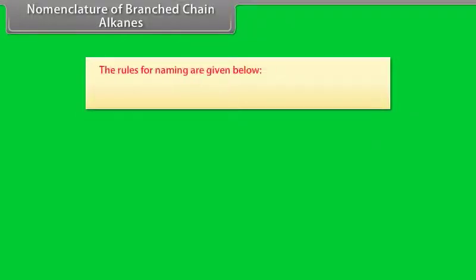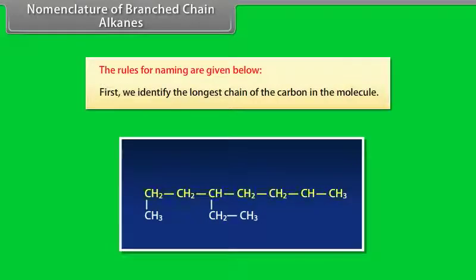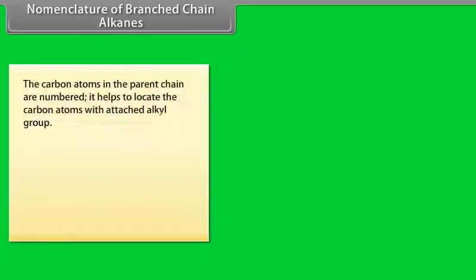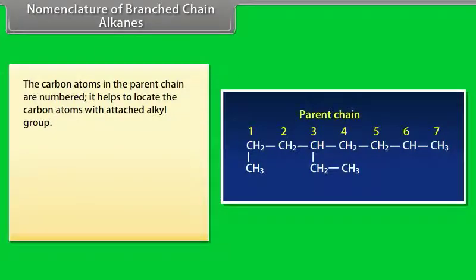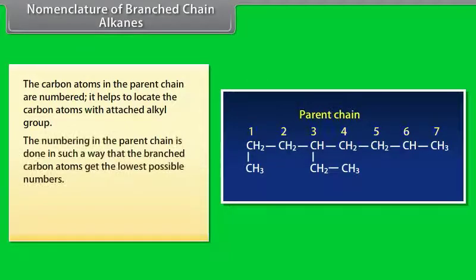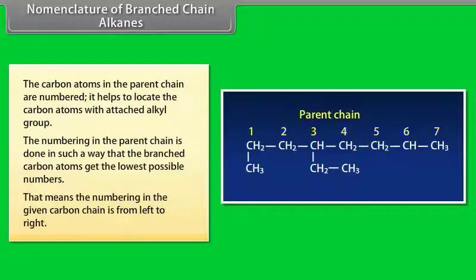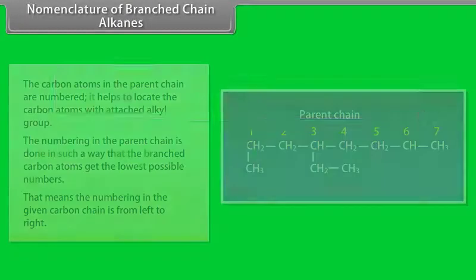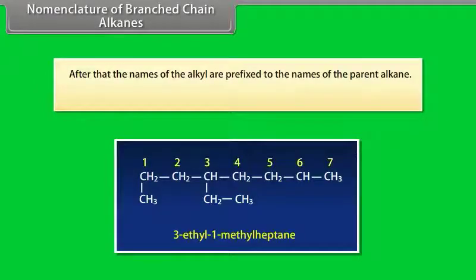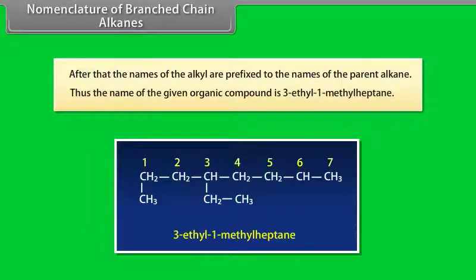Nomenclature of branched-chain alkanes. First, identify the longest carbon chain in the molecule. Number the carbon atoms in the parent chain to locate those with attached alkyl groups, giving branched carbon atoms the lowest possible numbers — meaning numbering goes from left to right. Then, the names of the alkyl groups are prefixed to the name of the parent alkane. For example, the compound is named 3-ethyl-1-methyl-heptane.